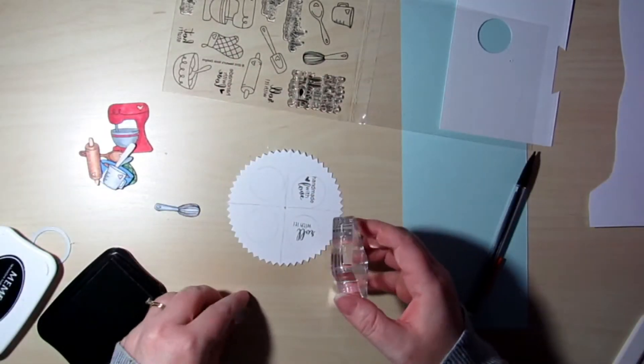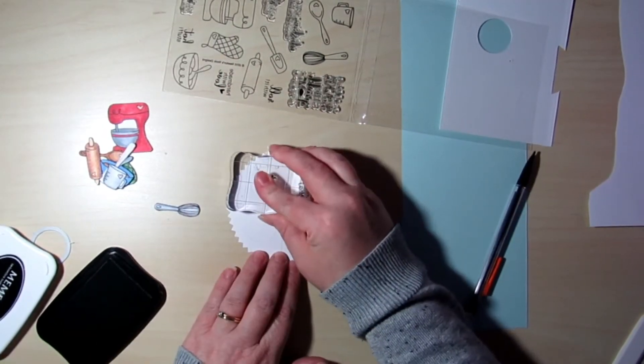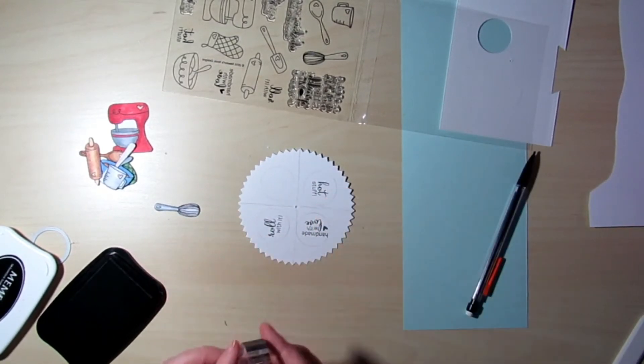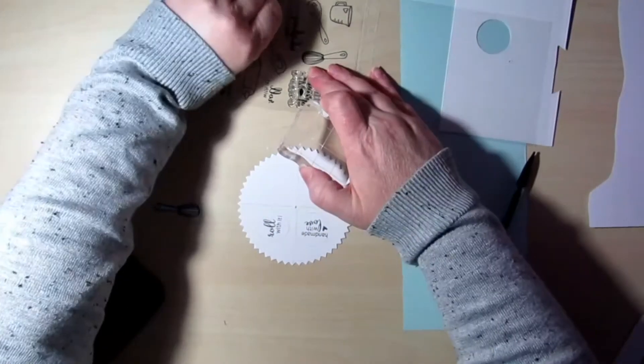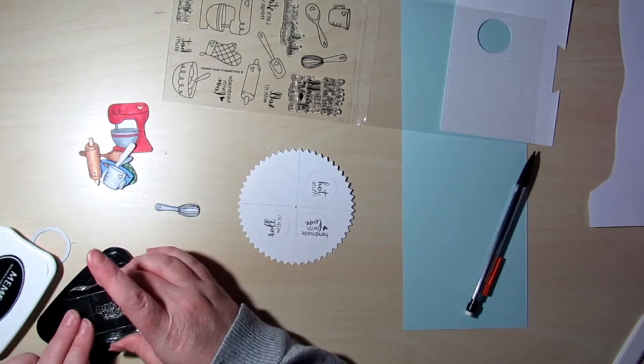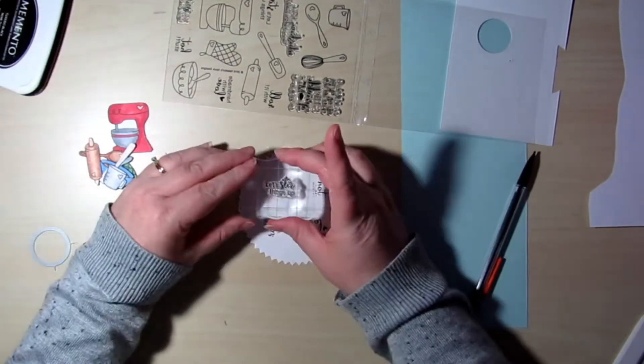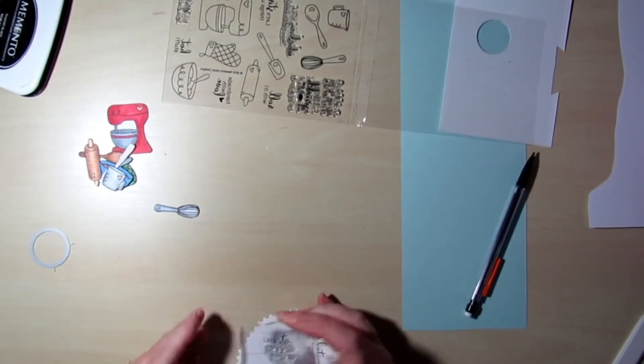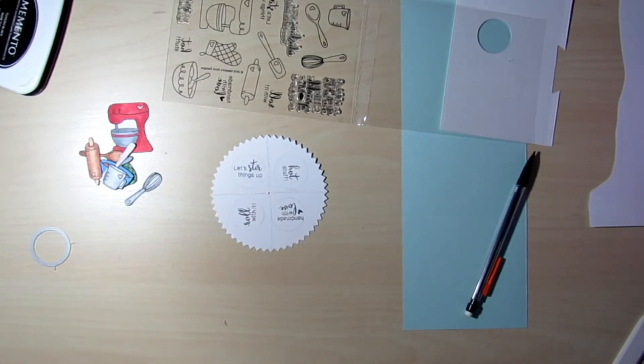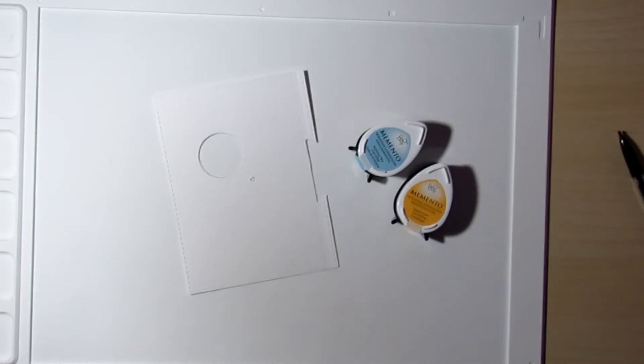And again, you just keep turning it and you'll see like you can't just stamp them all in the same direction. That one there says hot stuff. And then this last one here says let's stir things up and it fits into that circle kind of tightly, so I do pull it a little bit closer to me to make sure that it's centered in there like it needs to be.